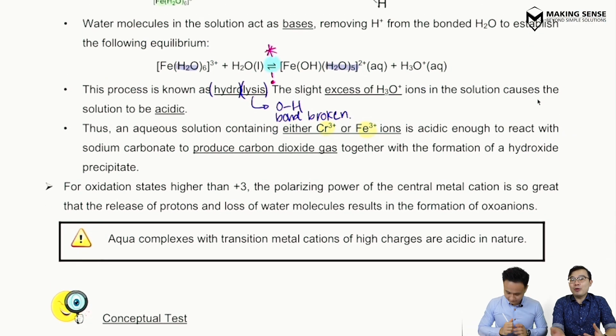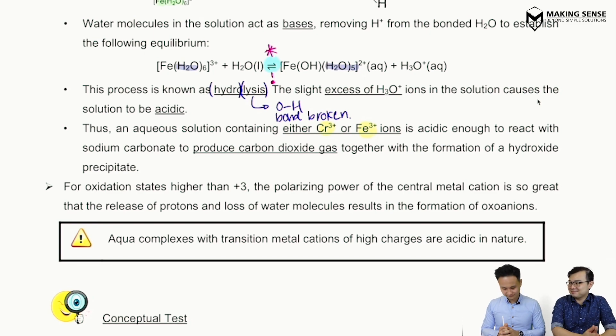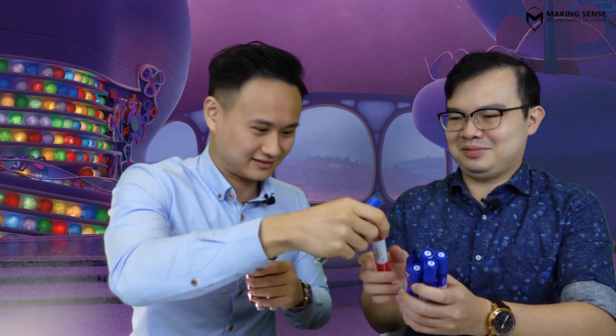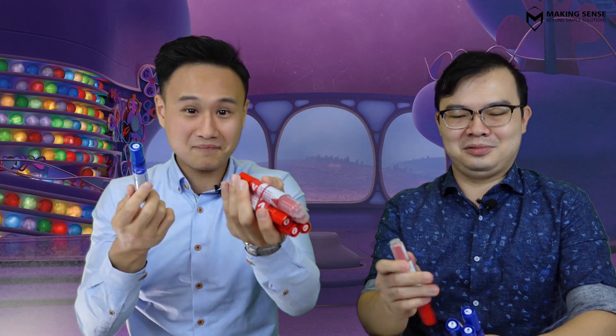Let's use an analogy to understand ligand exchange. Imagine I have six blue ligands and you have six red ligands. I don't like my blue ones — I'm unstable — so I want to swap. After swapping all six, I'm happier and more stable. But I don't have to swap all of them; even swapping just a couple still leaves me relatively stable. So ligand exchange doesn't have to replace everything — it depends on the specific reaction.